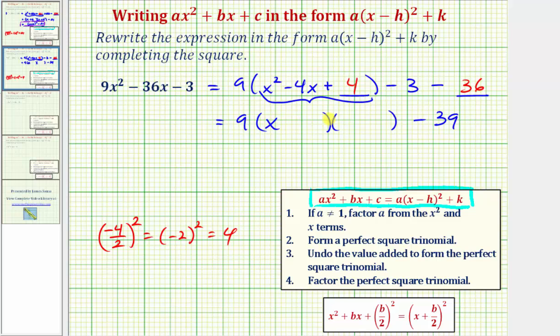Factoring the trinomial, we'll have a factor of x here and here. The factors of positive four that add to negative four are negative two and negative two, so we have minus two and minus two. We're adding as a perfect square, we have nine times the quantity x minus two squared, minus 39.